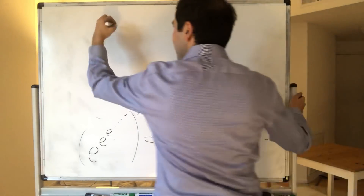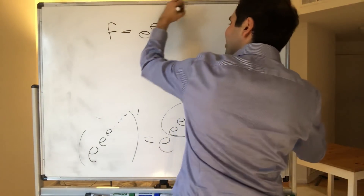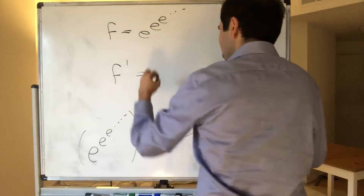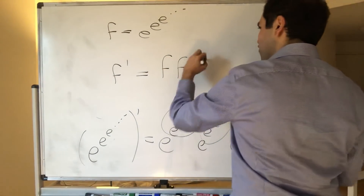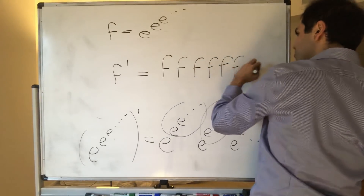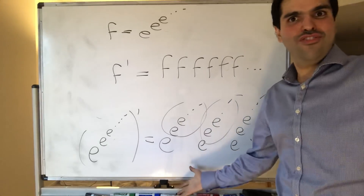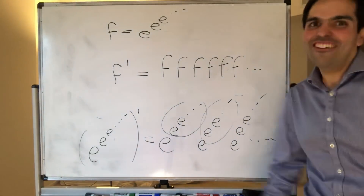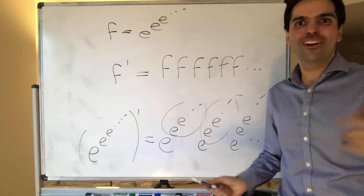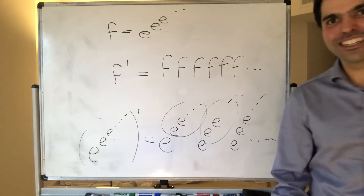Notice this infinite e to the x tower is a solution of our differential equation, because if f is e to the e to the e to the x (infinite tower), then f' equals f times f times f times f — in other words f' equals f^∞. If you like this crazy extravaganza and want to see more math, please make sure to subscribe to my channel. Thank you very much!